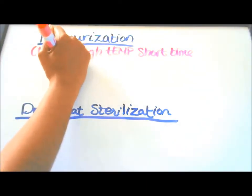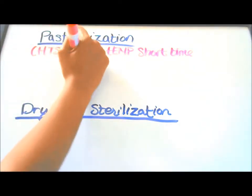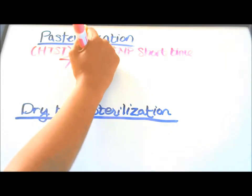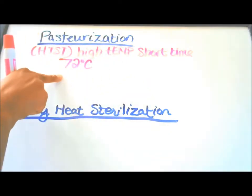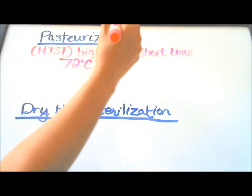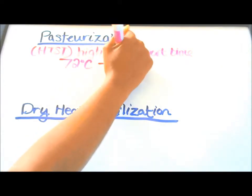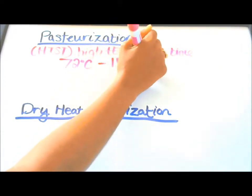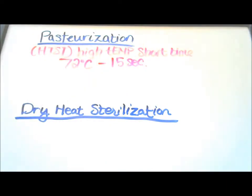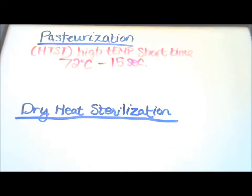For HTST, the temperature needed is 72 degrees Celsius, and the length of time needed is 15 seconds. With HTST, pathogens are killed and it lowers the total bacteria count.